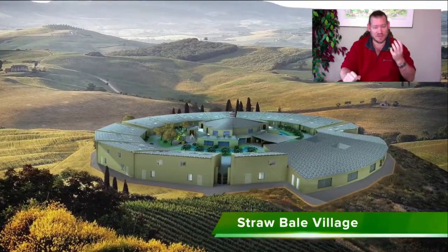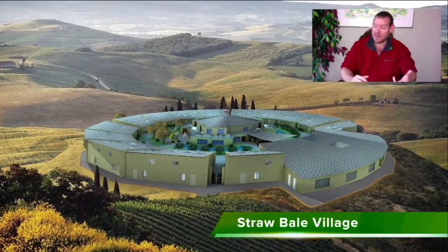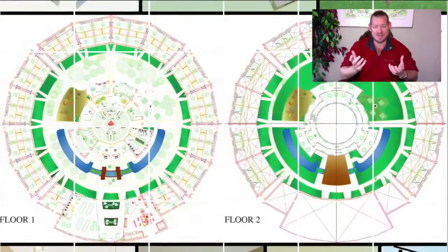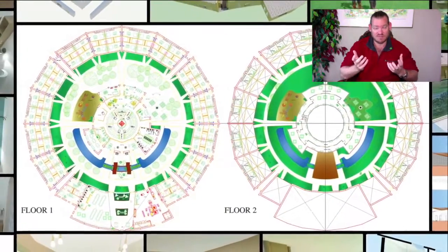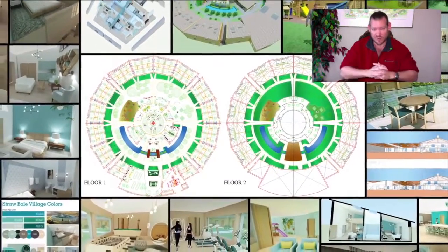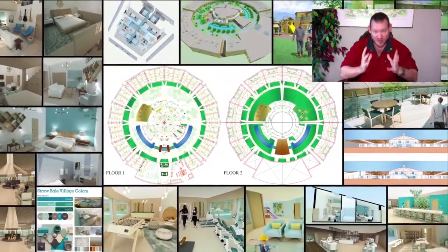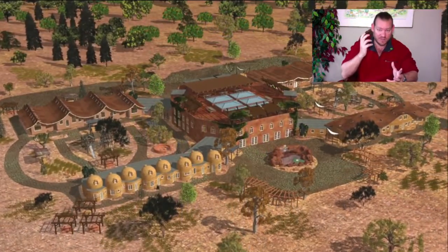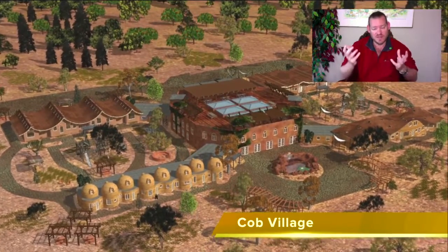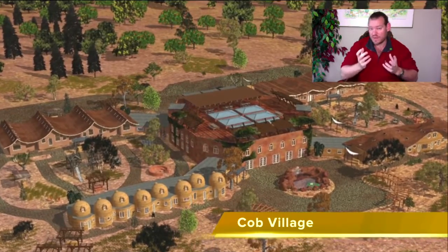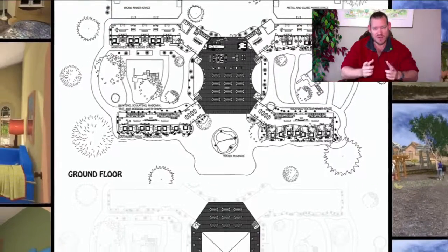We're putting these things together to create an open source community ecology model that provides a better way of living than most people are living right now. Those physical foundations — food, energy, and housing — along with the highest good education and economic models are designed to reduce the expenses associated with living and provide everything a person needs in a significantly more affordable way.